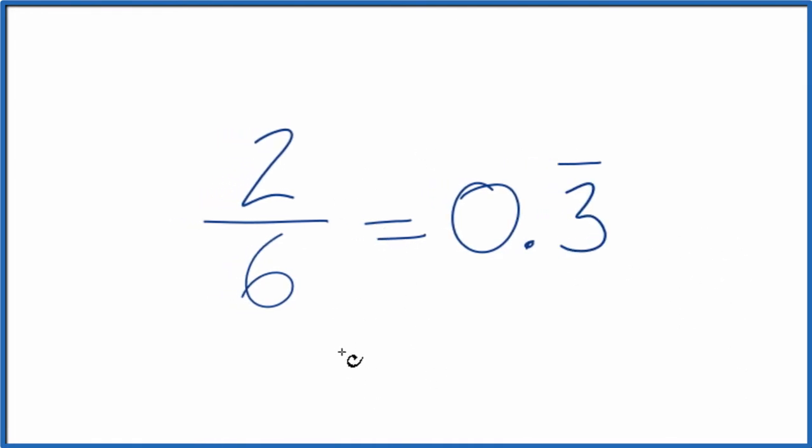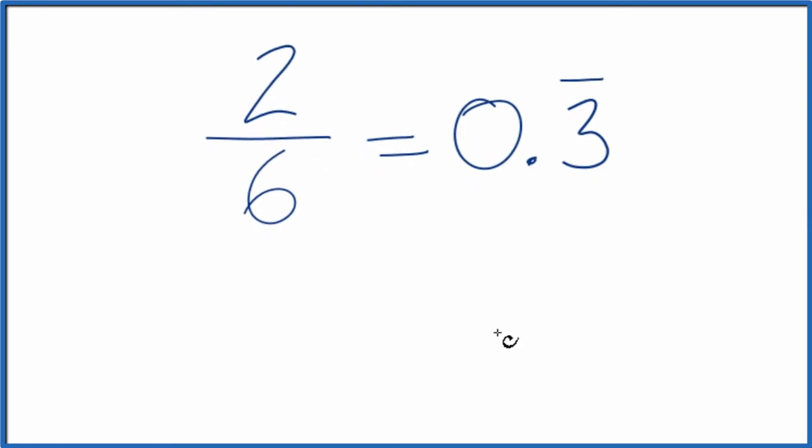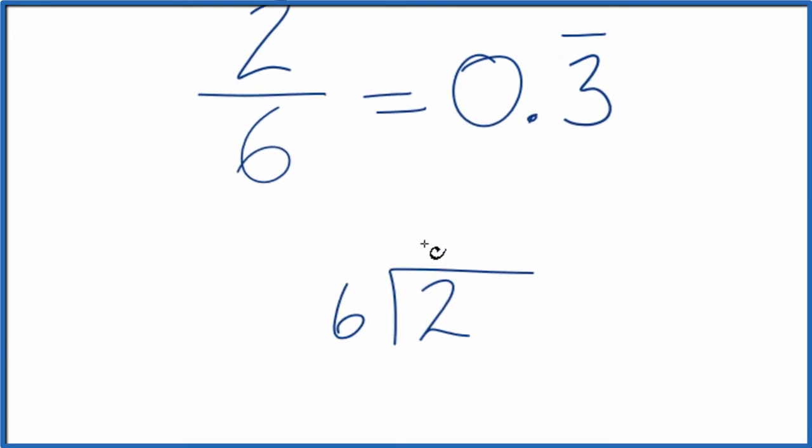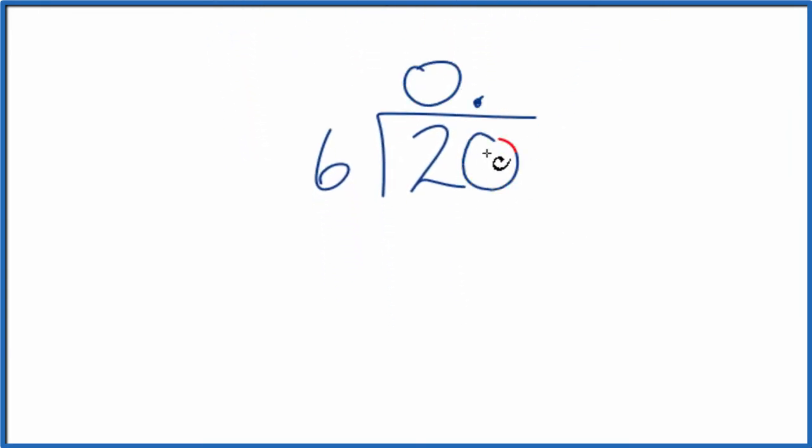The other way to do this is longhand. You can do the division longhand. We can take 2 and see how many times 6 goes into 2. 6 doesn't go into 2. Let's call this 0 and put a point here, and then 20.